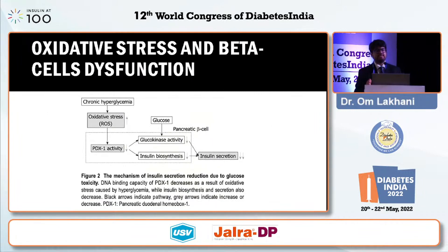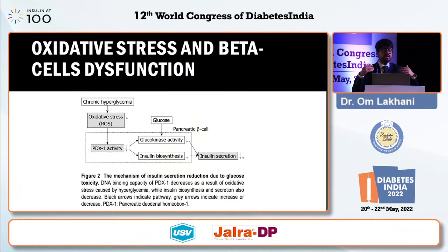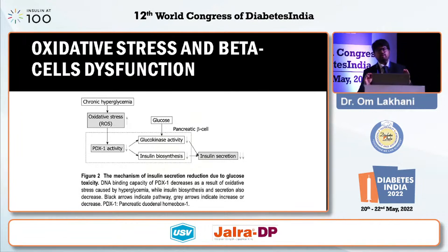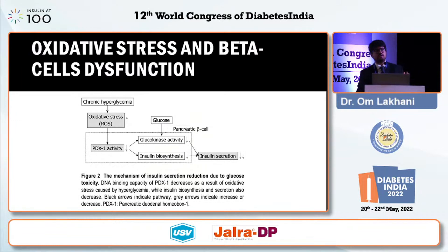The second cause of beta cell dysfunction is oxidative stress. We see this in patients with glucotoxicity — a patient comes in with blood sugar of 500, you start insulin, the blood sugar comes down, and the patient's endogenous insulin production and C-peptide improve. This is because chronic hyperglycemia leads to increased reactive oxygen species which stun the pancreatic beta cells, preventing them from producing more insulin. This creates a vicious cycle: stunned beta cells produce less insulin, less insulin means more blood sugar, more blood sugar means more reactive oxygen species. When you break this cycle with insulin or intensive management early on, you reduce oxidative stress and improve beta cell function.